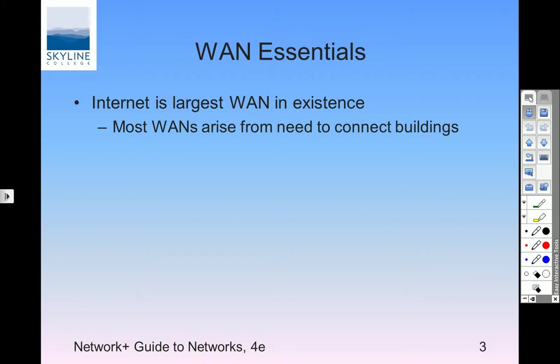The Internet is the largest WAN in existence. Are there other WANs? Yes — WAN is a topology, a technology. There's a connection between this building and Virginia Beach and all the other campuses, so they create wide area networks. One reason they do that is to protect you — your financial aid information, you don't really want that on the Internet.